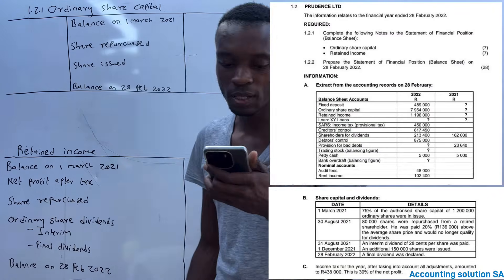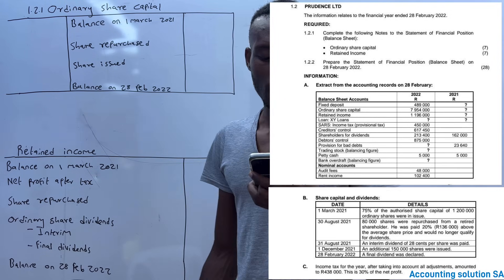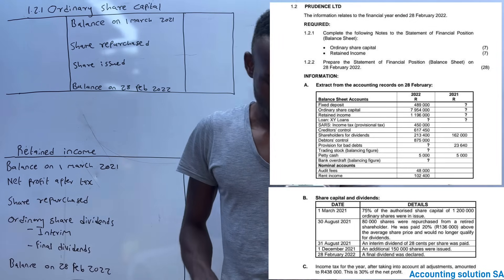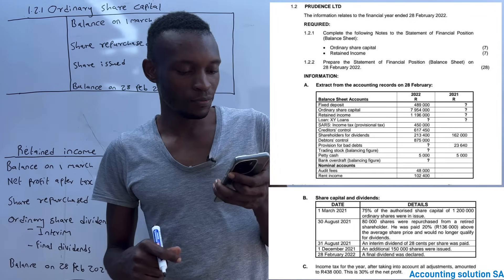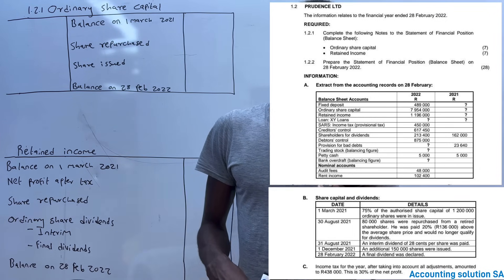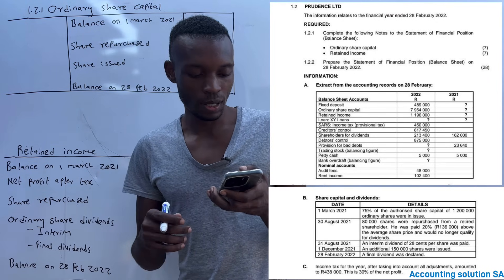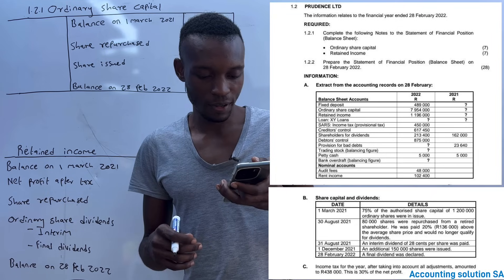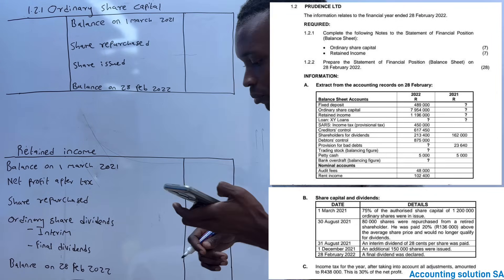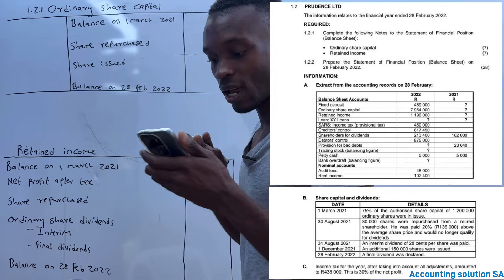Let's check the question paper. The information relates to financial year end 28 February 2022. We are required to prepare these two notes. Now, from information section A, they give us our closing balances but no opening balance. This means we can transfer this balance and work from there - our closing balances are given, so we are going to start from the bottom.